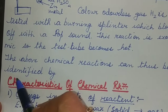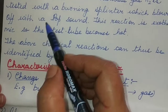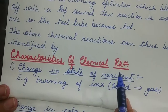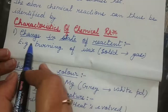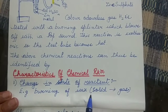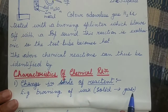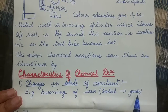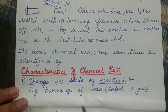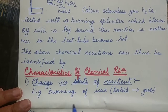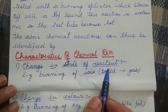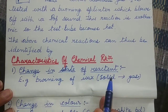The above chemical reactions can be identified by some characteristics of chemical reactions. The first characteristic is change in state of the reactant. When we burn wax, wax is a solid and after burning it gets converted into gas. Similarly, when magnesium ribbon is burned, magnesium was a solid and after burning it changed into a powder. So change of state shows the occurrence of a chemical reaction.